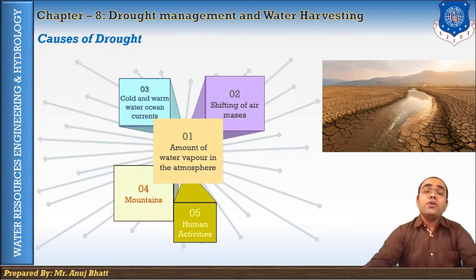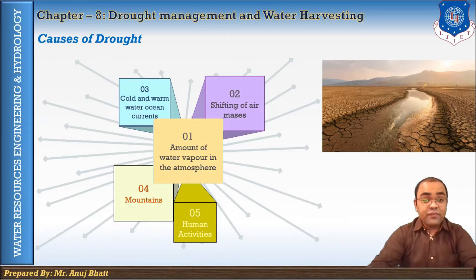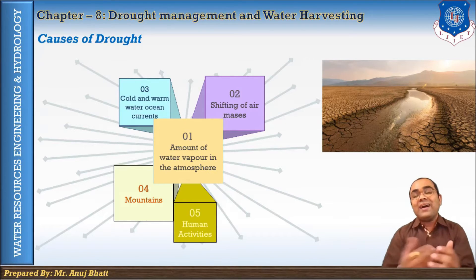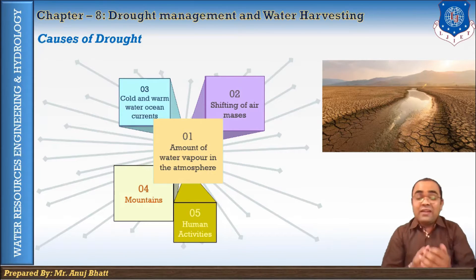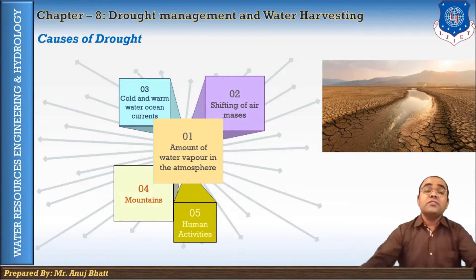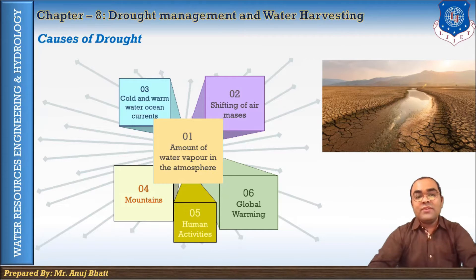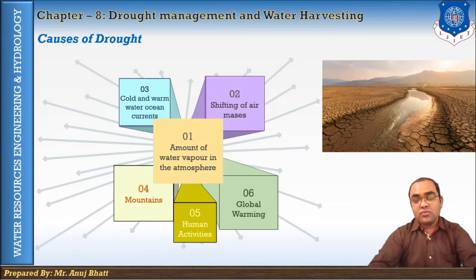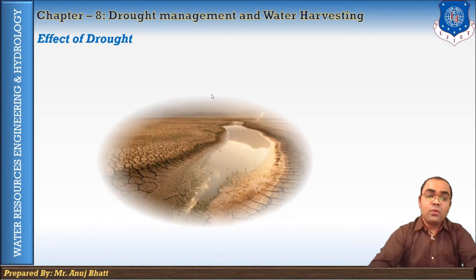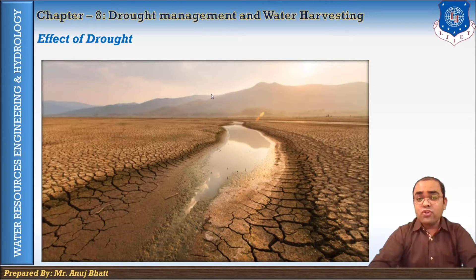Human activity can directly trigger drought through deforestation, over-farming, excessive irrigation, and construction of buildings. These man-made activities may lead to or trigger drought. Additionally, global warming will result in increased world rainfall along with drought in some areas and flooding and erosion in others. These are the main causes of drought.